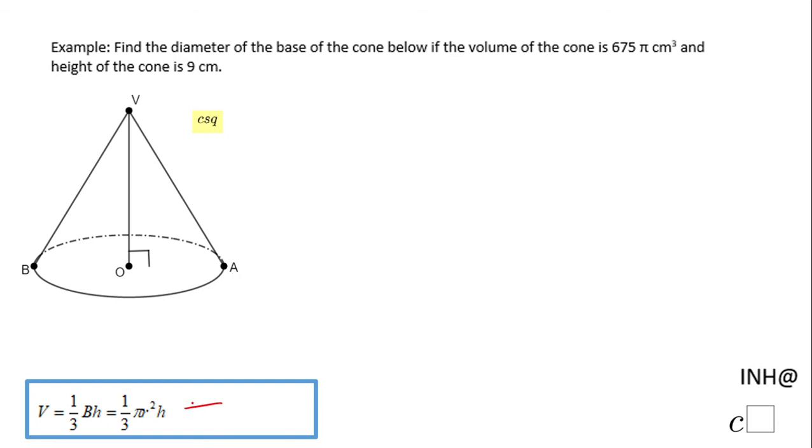For that reason I'm going to use the formula you see down here which says volume equals 1/3 πr²h. In this formula we know that the volume is 675π, then we're going to have that equals to 1/3 πr² and then h is 9 given in the problem.